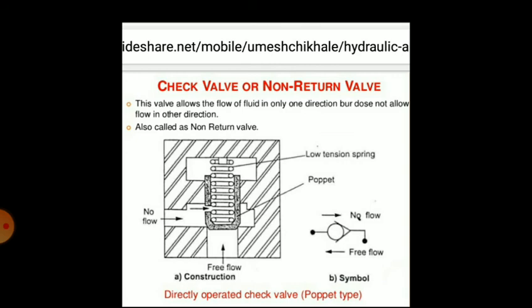You can see the construction of the check valve or non-return valve — it is a poppet-type valve, also called a directly operated check valve. You can also see the symbol of a check valve: in one direction the arrow indicates no flow, and in the opposite direction there is free flow. The purpose of the check valve is to block the flow of fluid in a given direction but to permit unrestricted flow in the opposite direction.